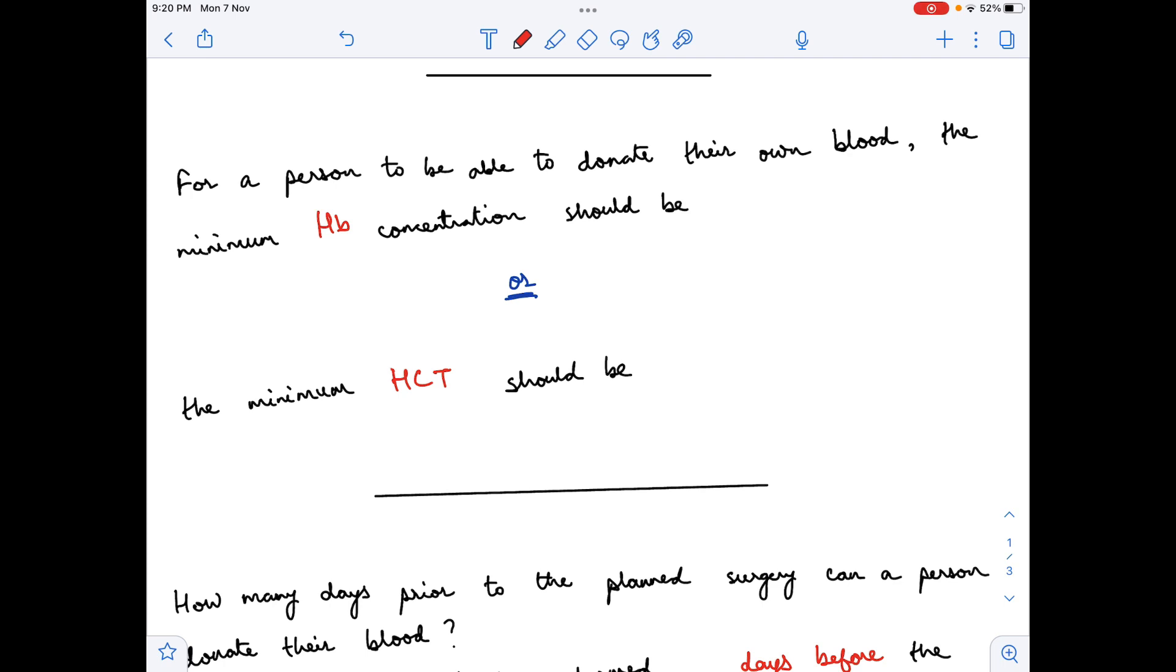The next question that arises is, what should the minimum hemoglobin concentration be for a person to be able to donate their own blood? The answer to that is, the minimum hemoglobin concentration should be 11 gram percent or the minimum hematocrit should be 34 percent.